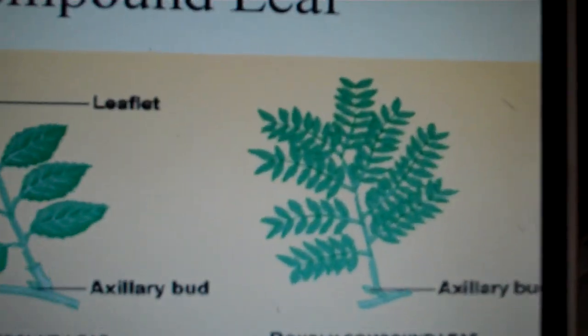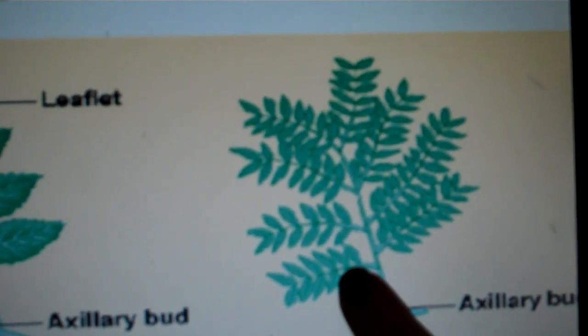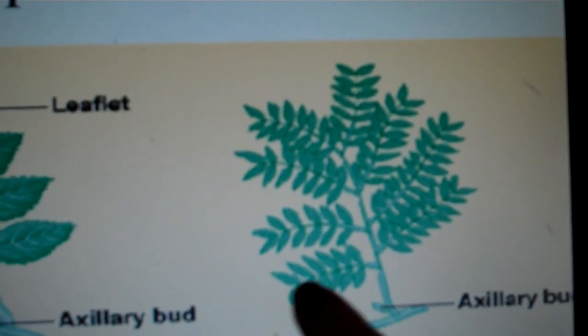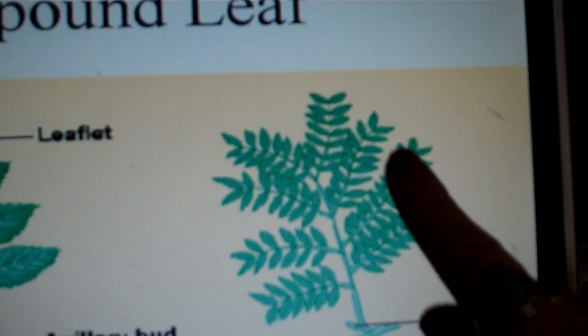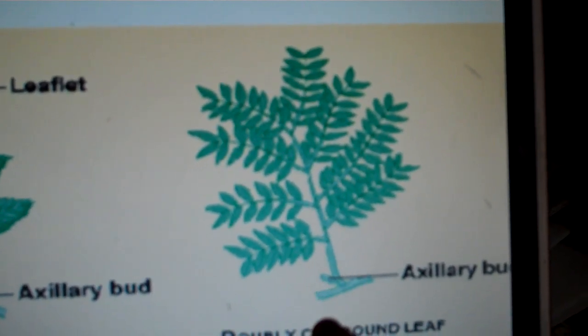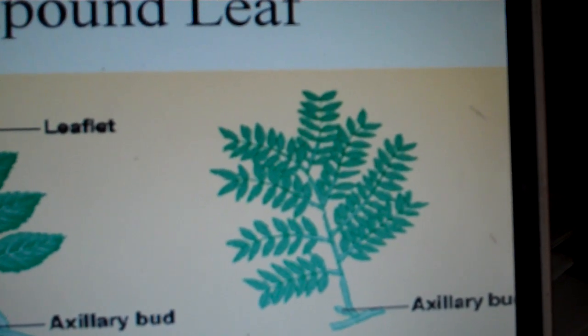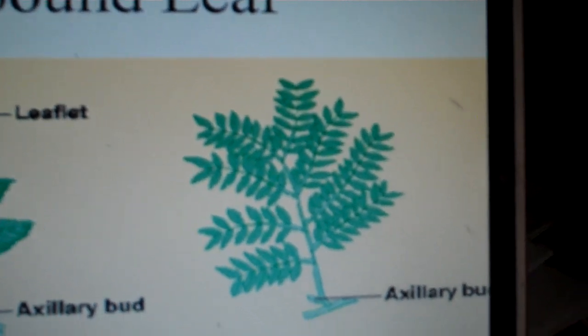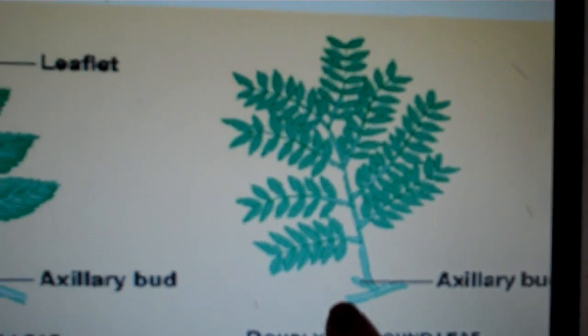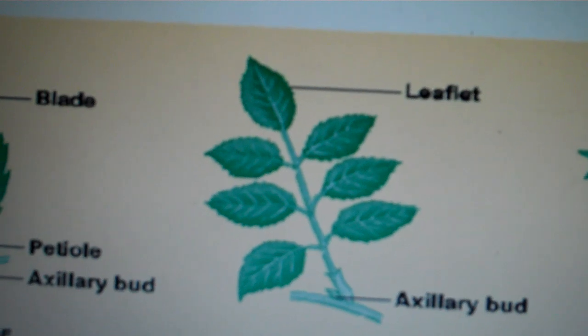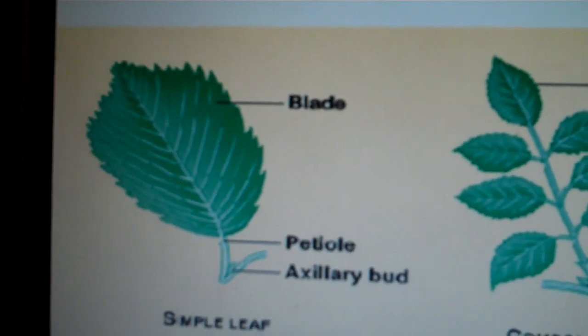We have a doubly compound leaf, where each leaflet is made of its own leaflets. Again, this whole region here is still referred to as the blade. You'll notice common structures between the three types. They all have one petiole with an axillary bud. Here's our compound leaf, and then our simple leaf.